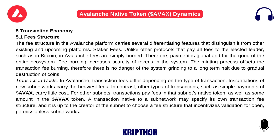The fee structure in the Avalanche platform carries several differentiating features that distinguish it from other existing and upcoming platforms. Staker fees: unlike other protocols that pay all fees to the elected leader — such as in Bitcoin — in Avalanche, fees are simply burned. Therefore, payment is global and for the good of the entire ecosystem. Fee burning increases scarcity of tokens in the system. The minting process offsets the transaction fee burning, therefore there is no danger of the system grinding to a long-term halt due to gradual destruction of coins.